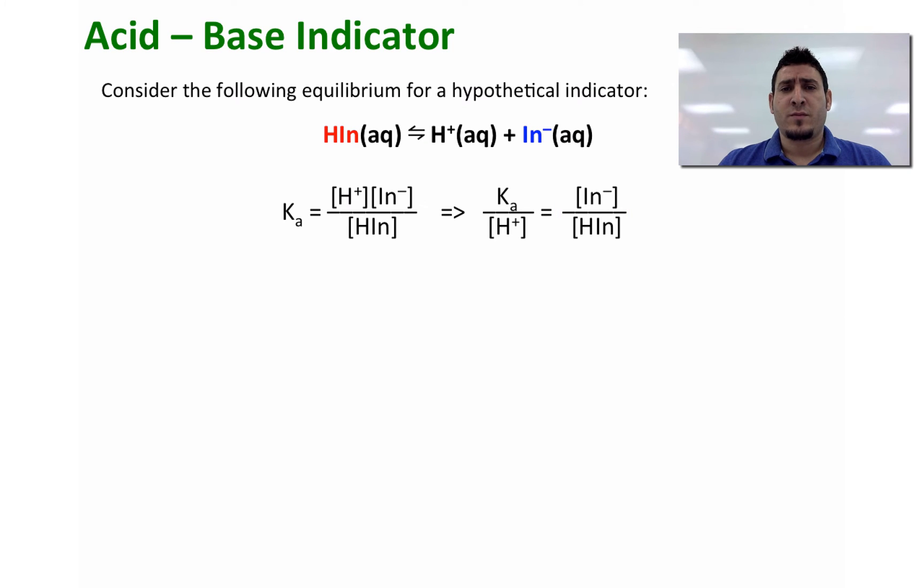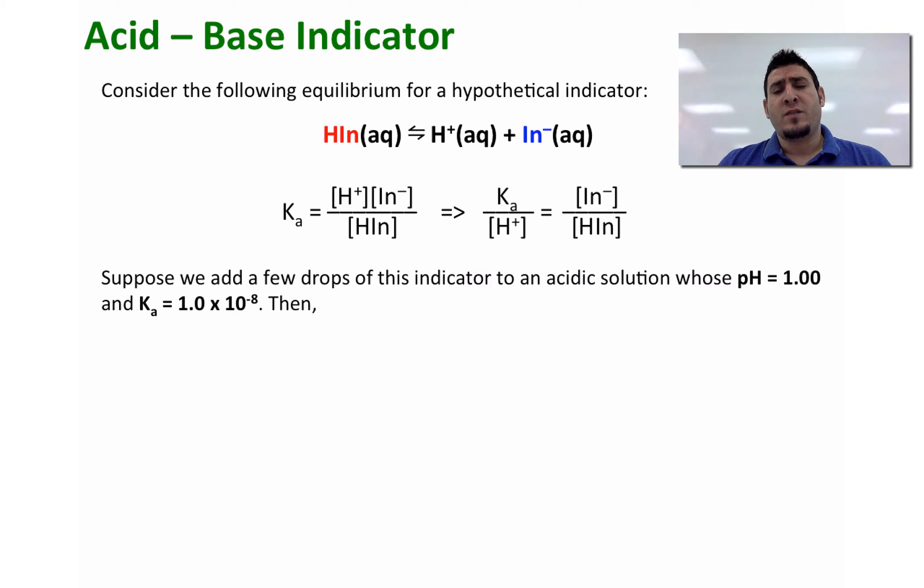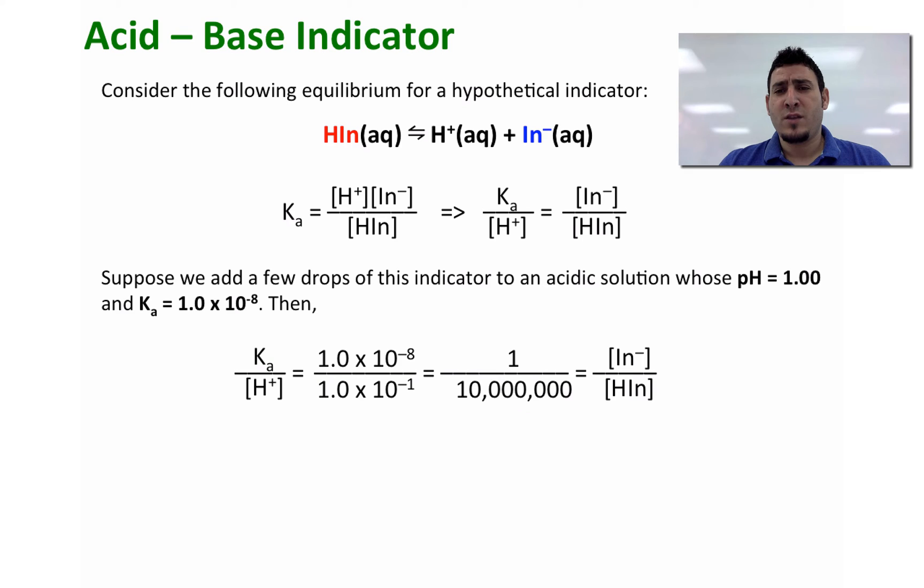Now suppose we add a few drops of this indicator to an acidic solution that has a pH equal to 1 and Ka equal to 1.0 × 10⁻⁸. Then in this case we can determine the ratio between the concentration of In⁻ and HIn, which is 1 over 10 million.